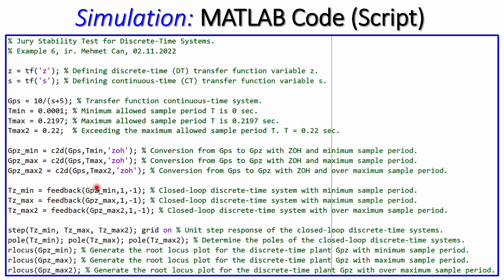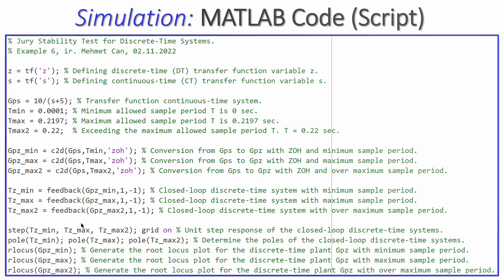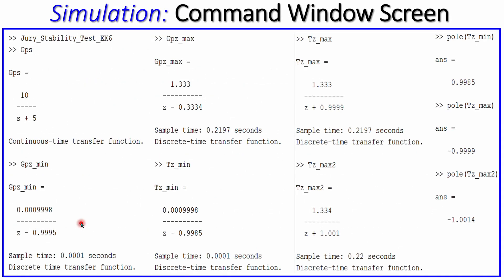The plant transfer function is converted from continuous to discrete time using the c2d function with each sample period. The closed-loop transfer function is generated using the feedback function. Then using step, pole, and rlocus, we can generate the step response, pole locations, and root locus. Running the script produces the transfer functions in the z-domain for both sample periods and their closed-loop forms.